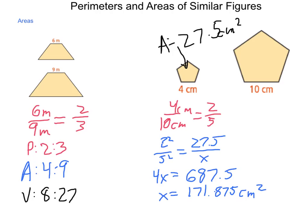So if you know that one side comparison and the area of one, you can always use proportional thinking and reasoning to calculate the other.